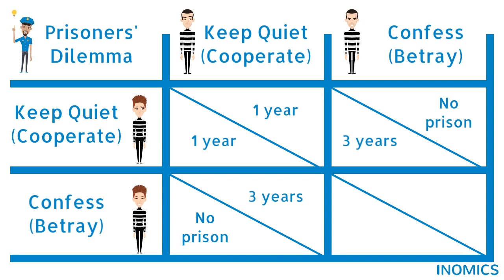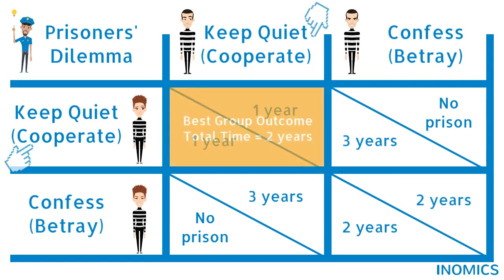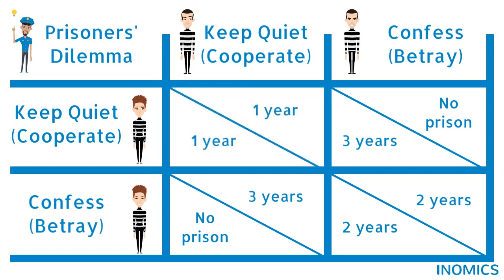If both players betray and confess, they'll receive a two-year prison sentence. The most favourable outcome for the group is if they both cooperate and stay quiet. Here, Holly and Max would get just two years combined for the most recent offense.